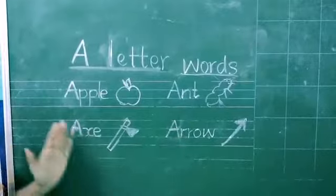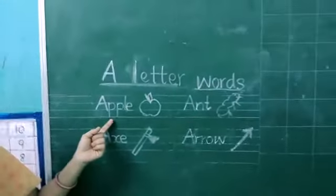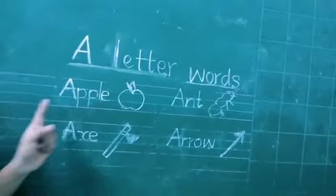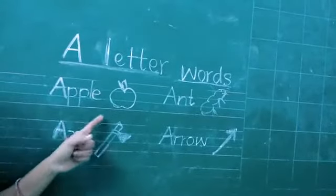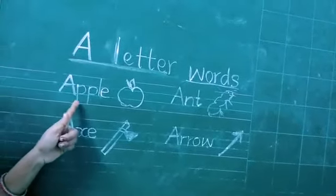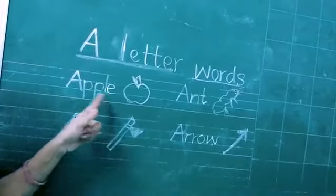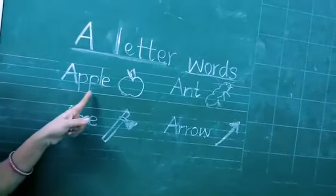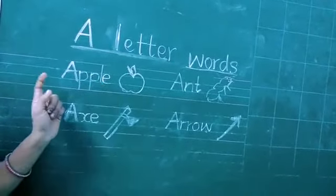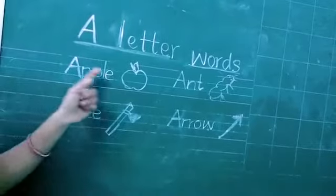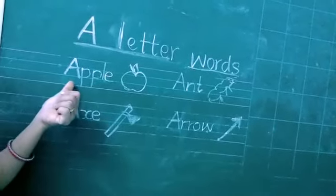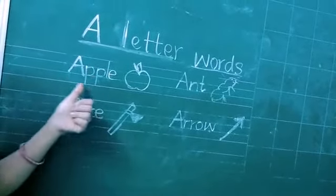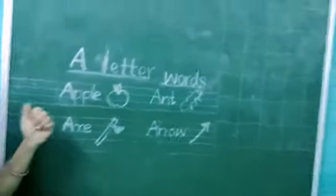I have written four words here. See here, what is this word? Apple. The spelling for apple: A, P, P, L, E. Apple. Say once again: A, P, P, L, E. Apple. This apple word starts with letter A. What is the sound of letter A? A.